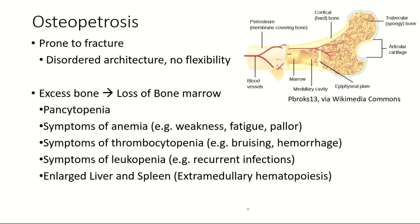You might think that in osteopetrosis, high bone deposition would make bones stronger, but that's not the case. The bones are actually prone to fracture due to a disorganized pattern of bone deposition. The architecture required to maintain bone strength is deranged. Additionally, excess bone deposition causes the bone to lose its flexibility, making it more prone to fracture.